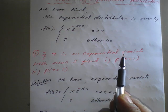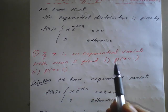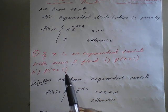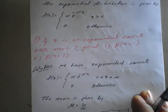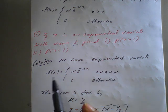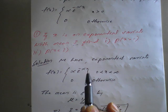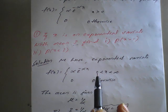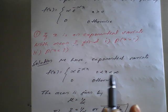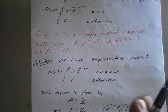The first example: if x is an exponential variate with mean 3, find P(X > 1) and P(X < 3). We know the exponential variate is given by f(x) equal to alpha e^(minus alpha x) for x between 0 and infinity, and 0 otherwise.